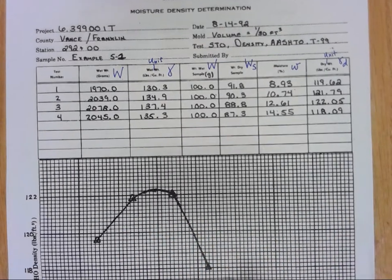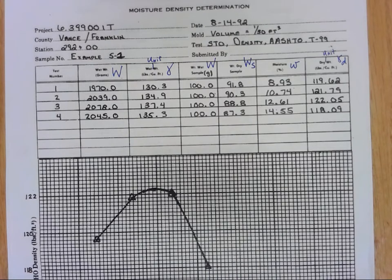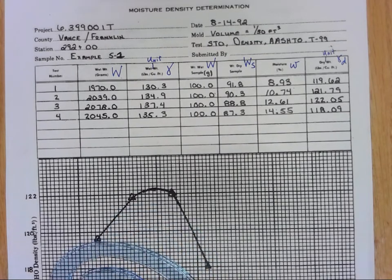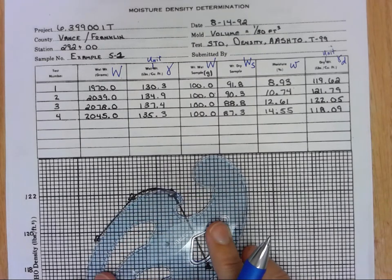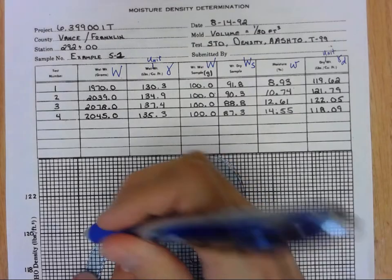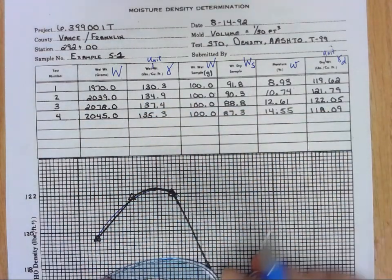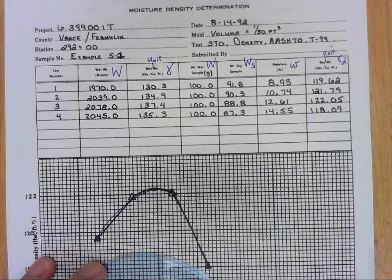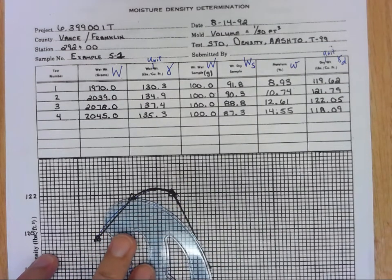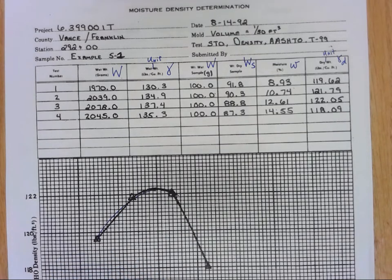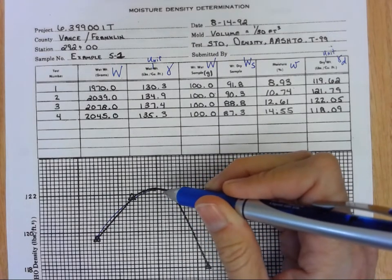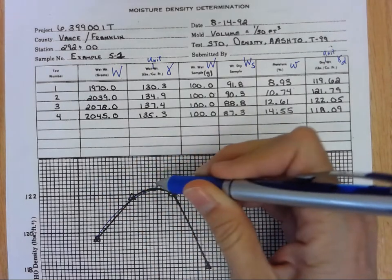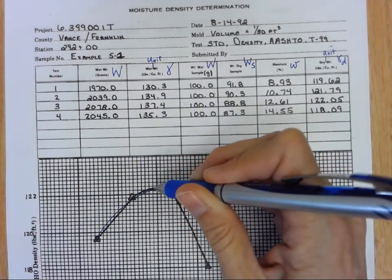So I just put a big point there. So we'll go ahead and follow that procedure to fill in all the rest of this table and then once you have your data you're going to go ahead and connect that data with a nice curve here. I like to use these French curves, you can use that to kind of make sure that you're getting a nice curved line there when you connect your points. You don't have to do that, you can just draw a curve, but I like to kind of put that in there just to see and make sure that I'm curving that correctly.